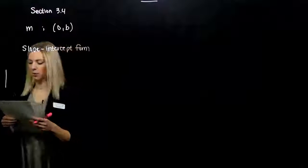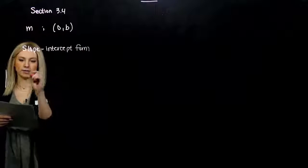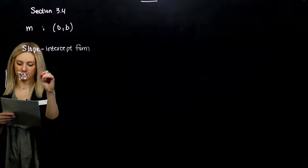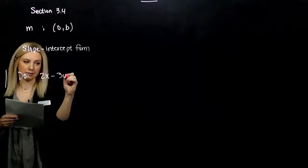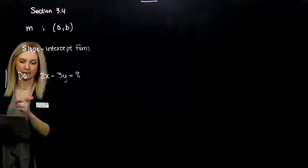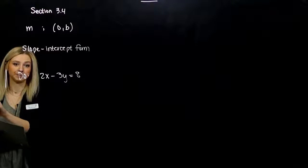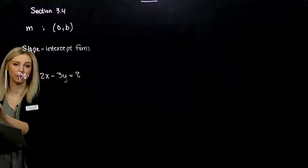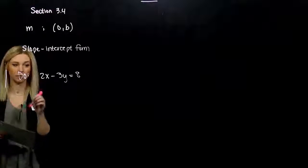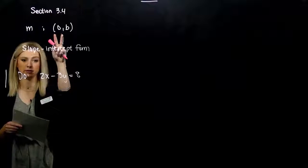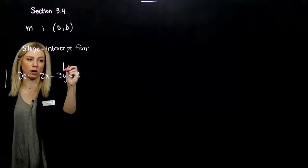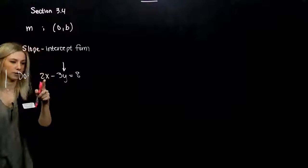In the first example, we want to find the slope and the y-intercept of 2x minus 3y equals 8. The slope isn't 2 and the y-intercept isn't 8, because it's not in slope-intercept form. We need to solve for y.